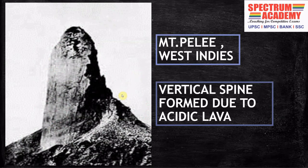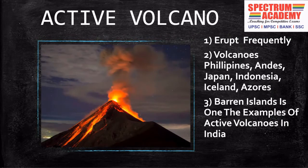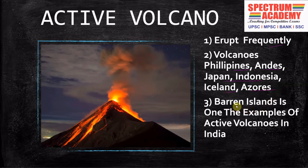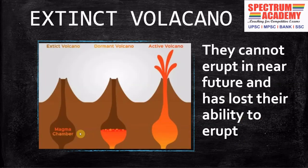Now let's discuss the types of volcanoes. The first is active volcanoes — they are said to be active when they erupt frequently. Examples include those in Philippines, Andes, Japan, Indonesia, Iceland and Azores. The Barren Islands is one example of an active volcano in India. The next type is dormant volcanoes — those which can erupt in the future and show some signs of eruption. The third type is extinct volcanoes — those which cannot erupt in the near future and have lost their ability to erupt.